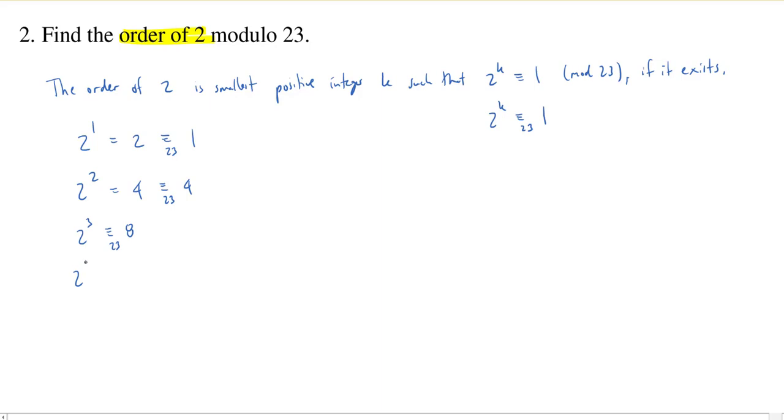How about 2 to the fourth? So that's going to be 16. At this point, let me note I could be just recomputing this each time, or I could be noting 2 to the fourth is just 2 times 2 cubed. So I could have just multiplied 8 by 2 to get here. Each one of these steps I'm multiplying by 2.